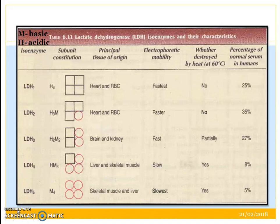This table gives the different isozymes, their subunit constitution, which tissue of origin they are present in, and the percentage of normal serum in humans. LDH2 is largely present at 35%, whereas LDH5, present in skeletal muscles and liver, is present in normal serum at just about 5%. The isozymes with muscle subunit compositions are basic in nature, whereas the heart ones are acidic in nature.